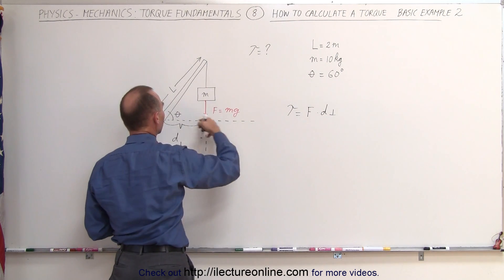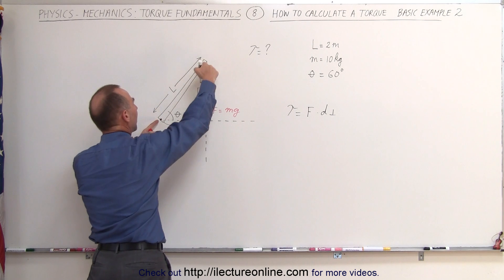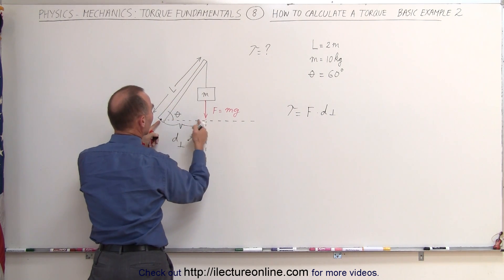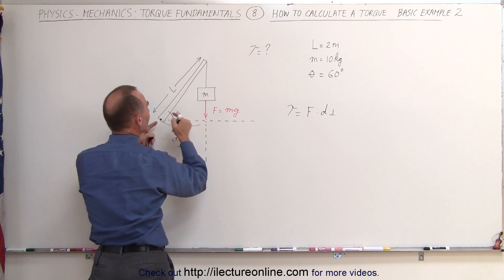Now notice that if we take a look here, we can see that the hypotenuse of this triangle is L, the length of the beam. And this here, d perpendicular, would be the adjacent side to the angle.